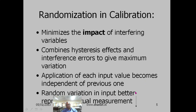Random variation in input better represents the actual measurement. When using a calibrated measuring instrument, the input variable will not always be increasing or decreasing. In a real measurement, you may get a high value at one moment and immediately a low value the next. It is not fair to use either increasing or decreasing order. The real variable will always be in random order, so when you calibrate, using random variation of input better represents the actual measurement conditions.